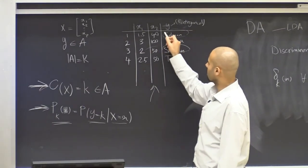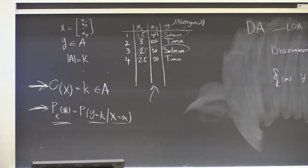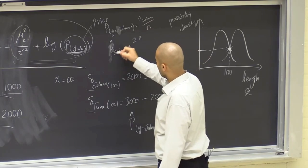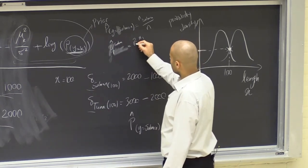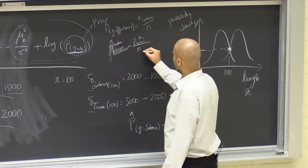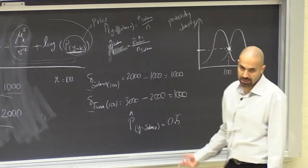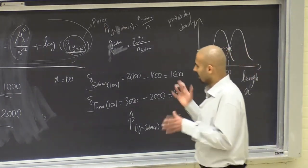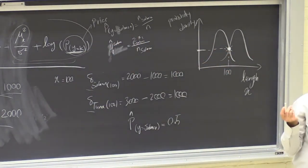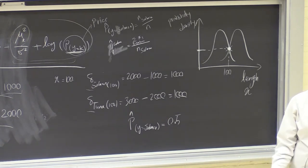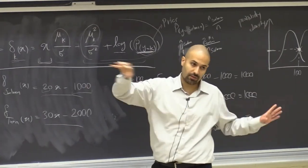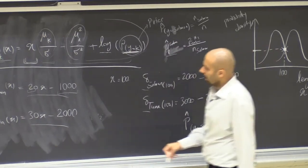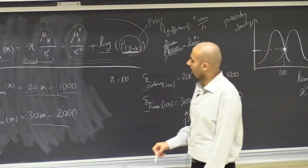We compute μ_1^(salmon) by summing x_1 across all rows where Y = salmon, divided by the number of salmon observations. Statistical software handles these calculations automatically. The prior term reflects how common salmon are versus tuna — when the prior is larger, its log is larger and the score is generally larger regardless of length. When μ is larger, the coefficient multiplied by the length is also larger.